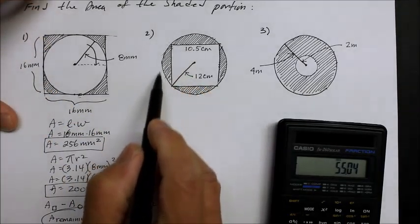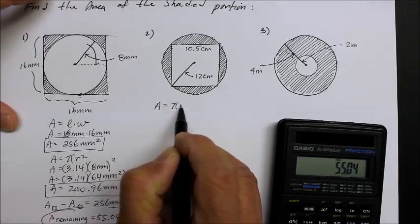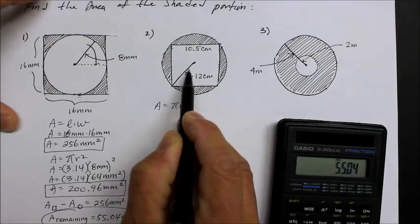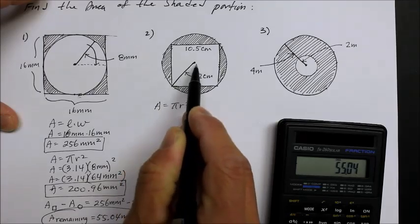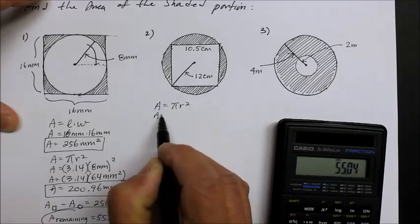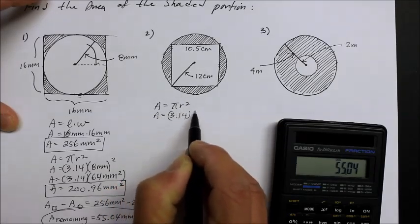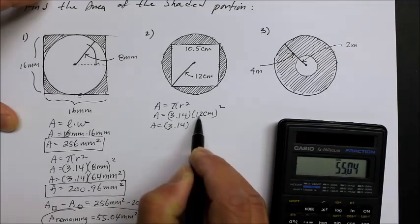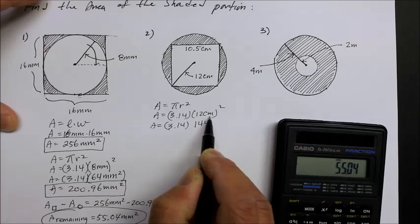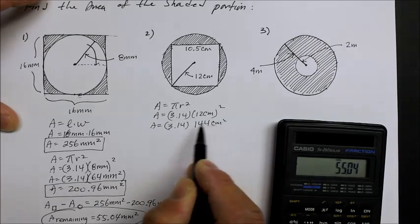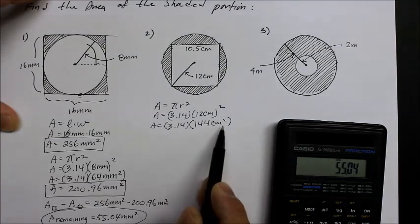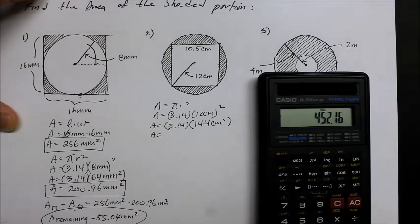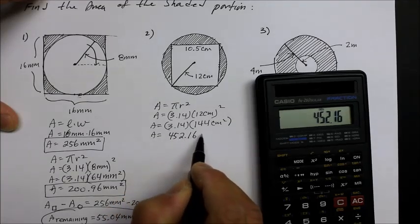First we find the area of the original big circle using pi r squared. The radius is given as 12 centimeters. So area equals 3.14 times 12 squared, which is 144 centimeters squared. Using the calculator, 3.14 times 144 equals 452.16 centimeters squared. That's the area of the big circle.